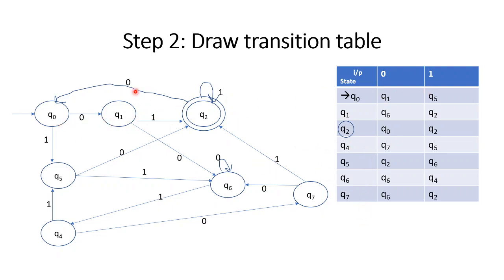Filling in the transition table: Q0 on 0 goes to Q1, on 1 goes to Q5 and Q6. Q2 stays at Q2. Q5 on 0 goes to Q2, on 1 goes to Q6. Q4 goes to Q7. Q7 on 1 goes to Q5. Q6 on 0 stays Q6, on 1 goes to Q4. Q7 on 0 goes to Q6, on 1 goes to Q2. Now we have the complete transition table.